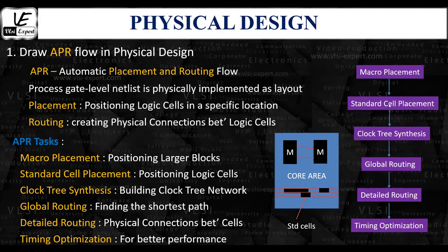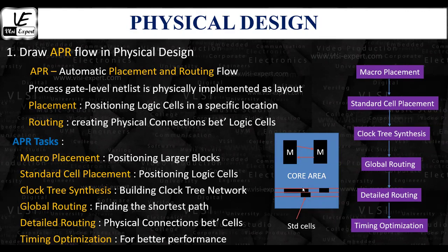The next stage in the APR flow is standard cell placement. The PNR tool approximates cell locations on the standard cell rows based on timing, congestion, and multi-voltage constraints. The cells may not align perfectly on the rows during initial placement, but the tool ensures correct alignment without overlapping through a legalization step.